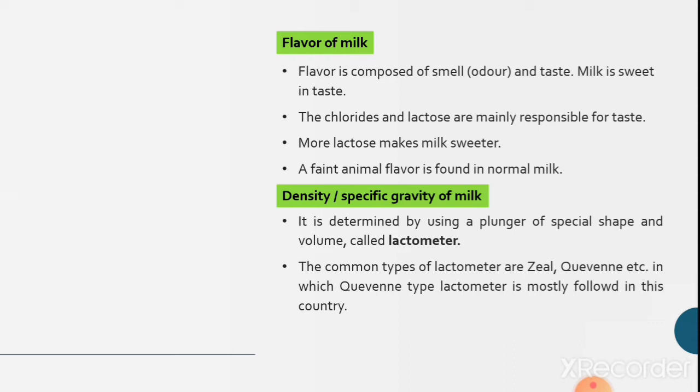Flavor of milk is composed of smell, that is odor and taste. The flavor of the milk is sweet or the taste of the milk is sweet. The chlorides and lactose are mainly responsible for the taste of milk. It is believed that more lactose makes milk sweeter. A faint animal flavor is found in normal milk.